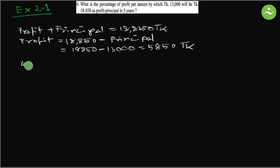Now we have to find out the rate of profit. We know a formula I equals PRN. Because we have to find out the value of R or the rate of profit, we can put PRN on the left side.